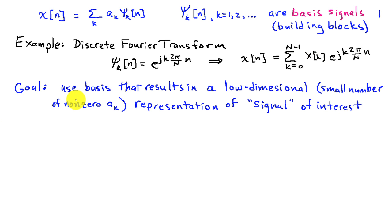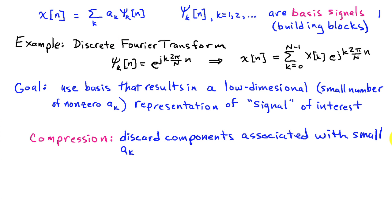Now, why do we want to do something like this? Well, the general goal is to use a basis that results in a low-dimensional description of the signal of interest. By low-dimensional, we mean that there's only a small number of coefficients that are needed to represent the signal that we're interested in. And consequently, those other coefficients are associated with noise. So if we can accomplish something like this, then there's three different types of problems that can be addressed.